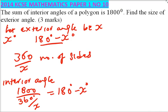So if we find X, we have managed to get the exterior angle. So you say it is 1800 multiplied by X over 360 equals 180 minus X degrees.